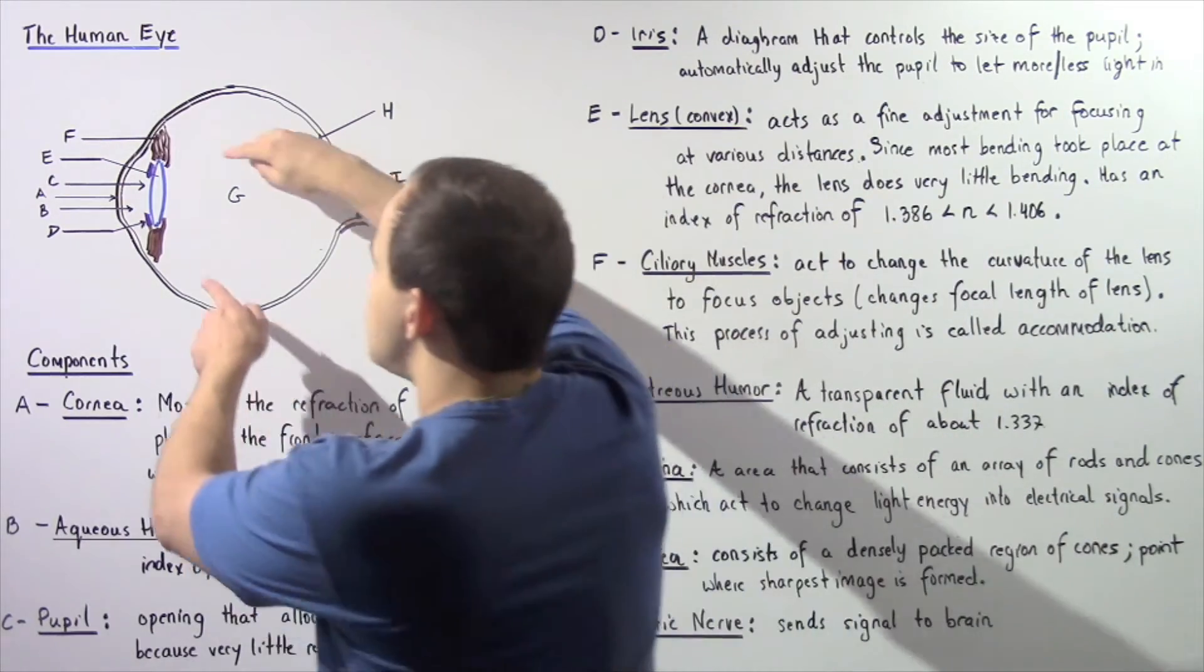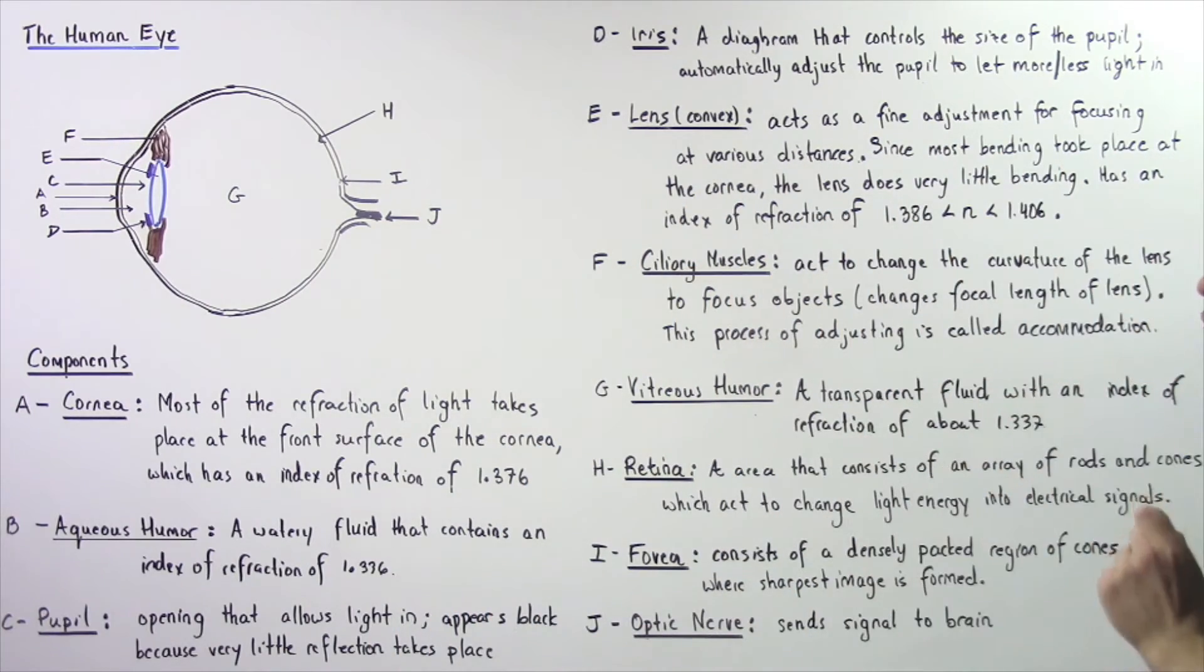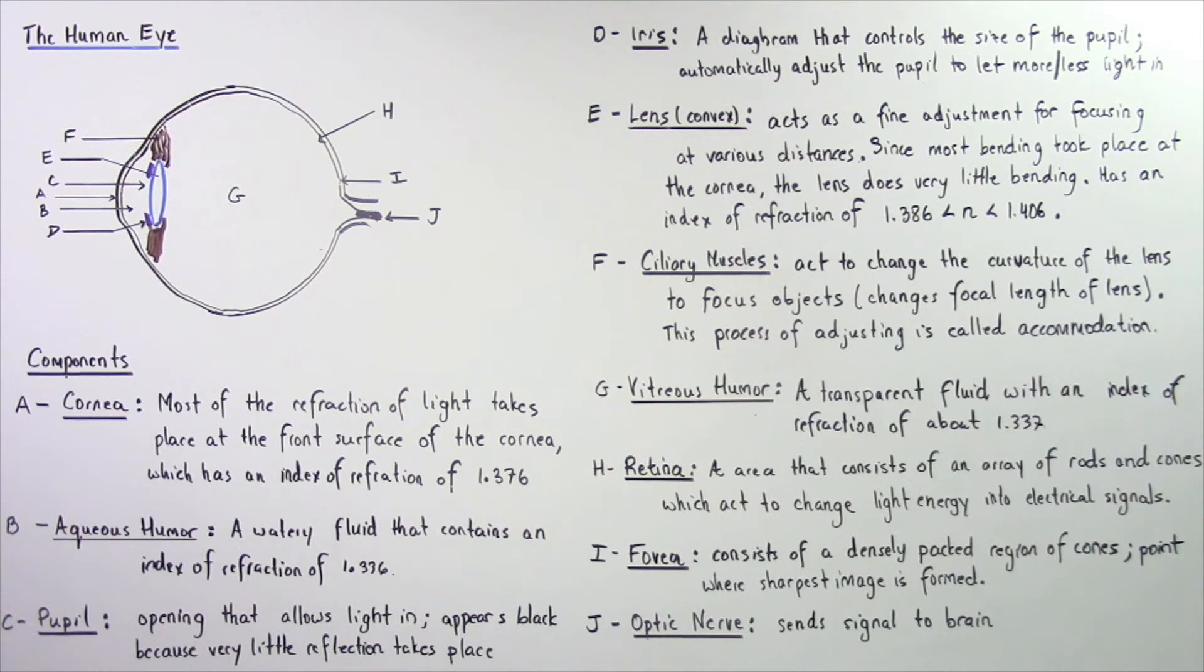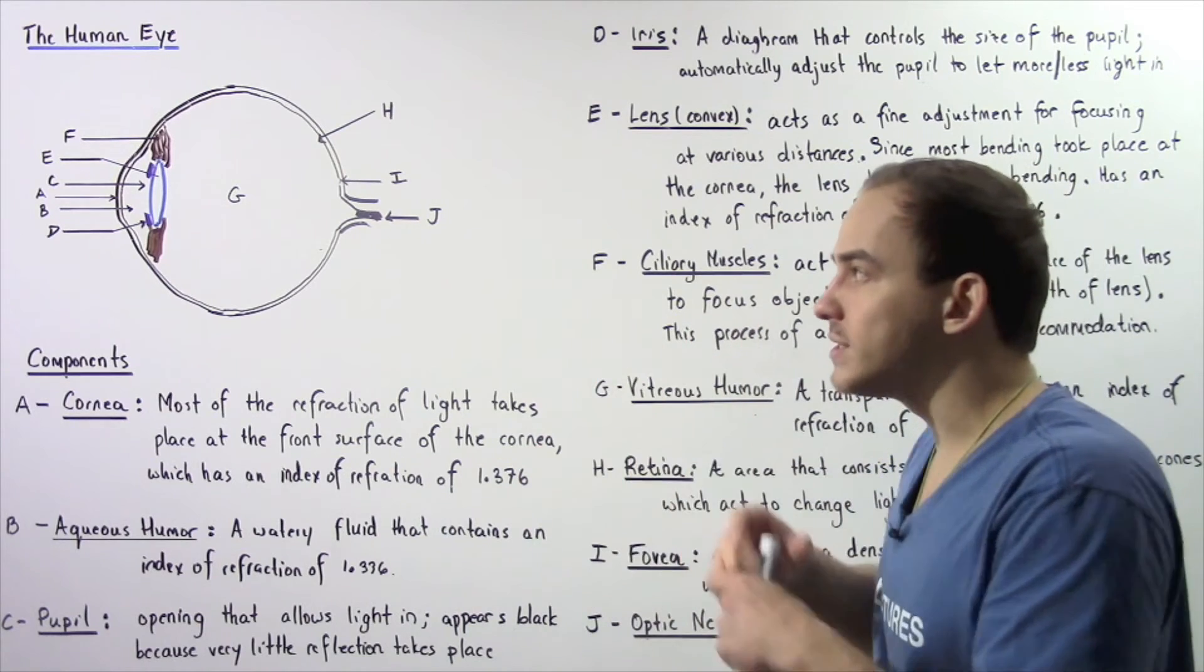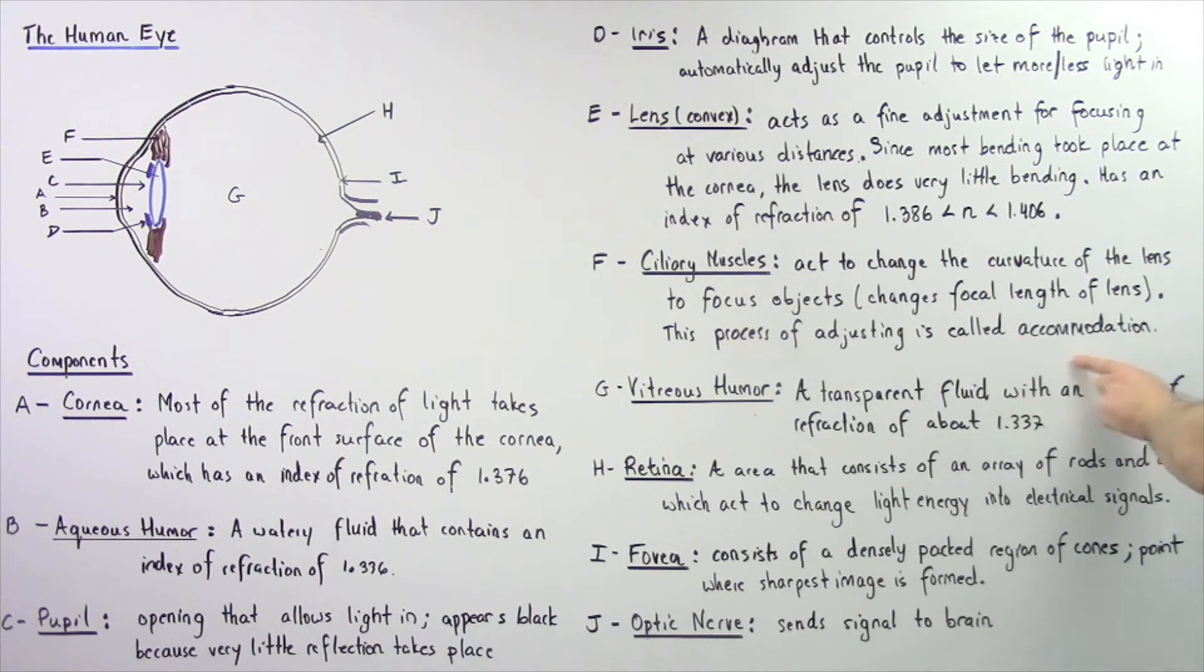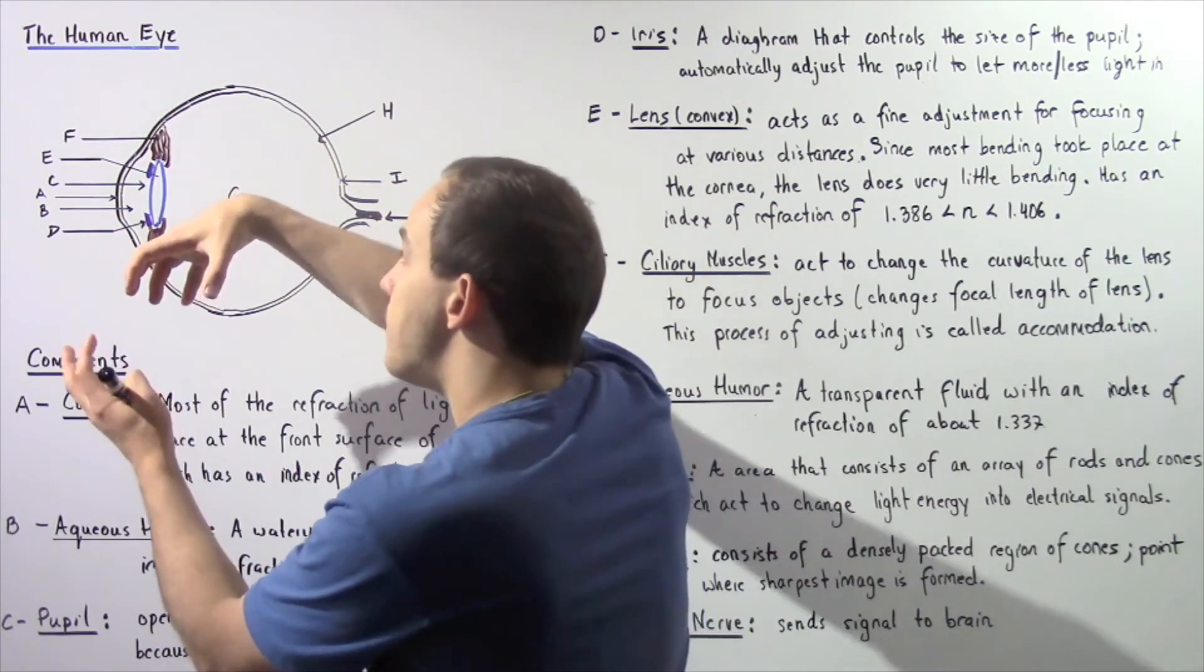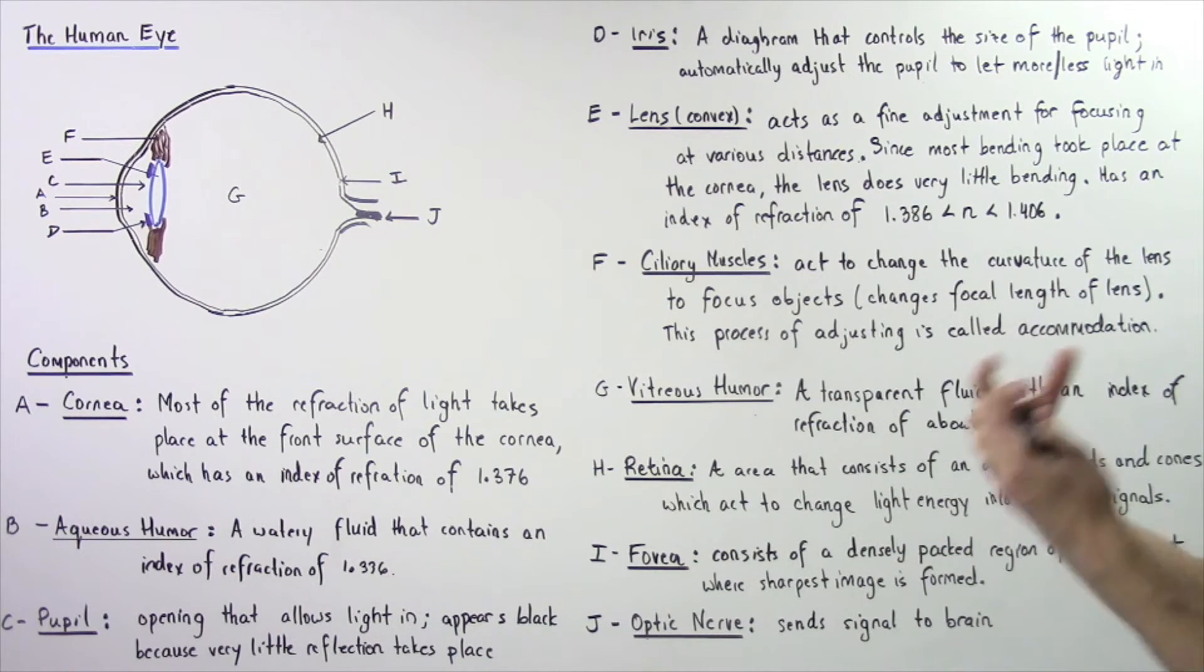Let's move on to these two brown sections labeled as region F. These are known as ciliary muscles and they act to change the curvature of the lens to focus our objects. And this ability to change the curvature of the lens to focus our objects is known as accommodation. What happens is when the lens bends, the focal length of the lens changes. And so, our image can be focused in or focused out.